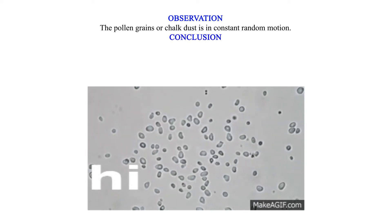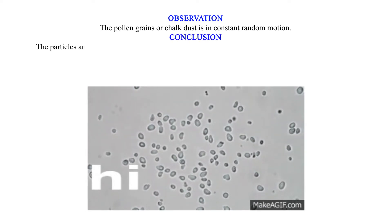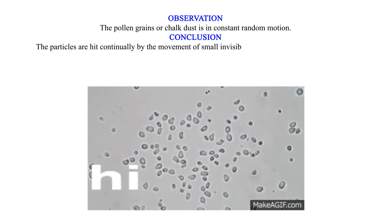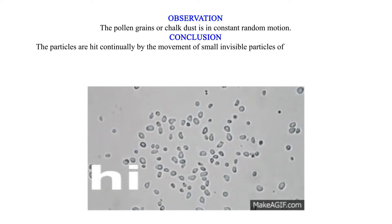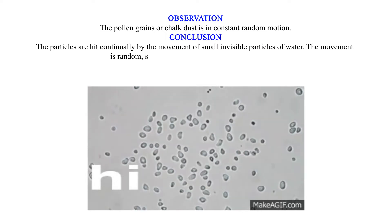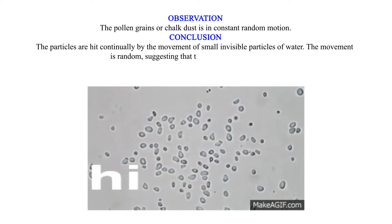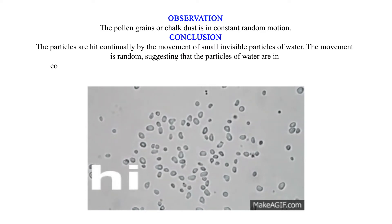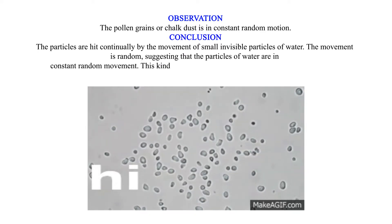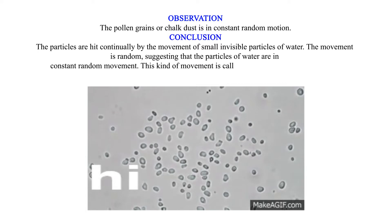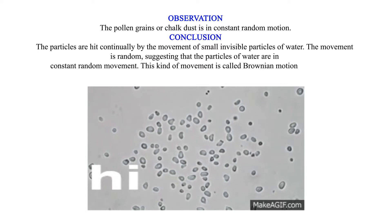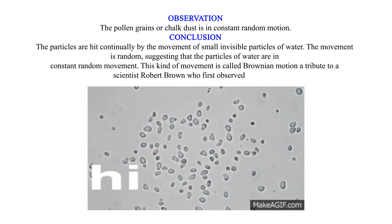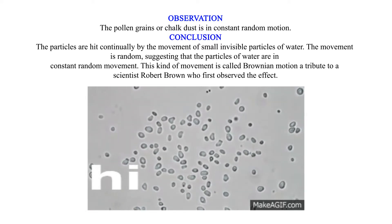Conclusion: The particles are hit continually by the movement of small invisible particles of water. The movement is random, suggesting that the particles of water are in constant random movement. This kind of movement is called Brownian Motion, attributed to scientist Robert Brown, who first observed the effect.